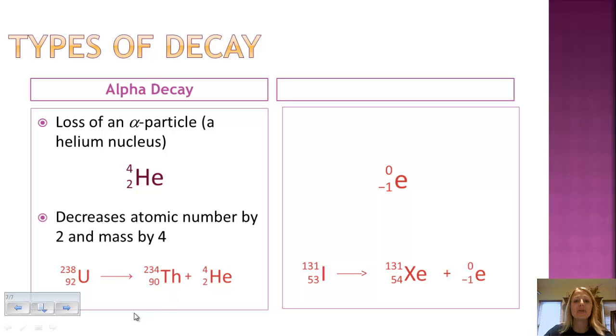Now how do you know if you did this right? If you look, the mass number on the left side of the arrow for uranium is 238. That number has to equal the two numbers that are added together. So 234 plus 4 equals 238. So the mass, when we add them together, is equal on both sides.